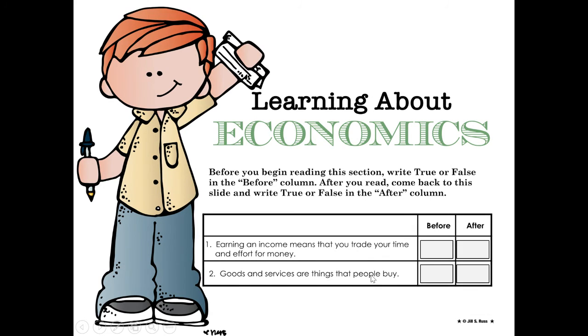Number two says: 'Goods and services are things that people buy.' If you think goods and services are things that people buy, you're gonna put true. If you don't, put false. And during our lesson, you're gonna learn if those things are true or false.